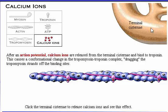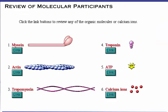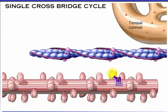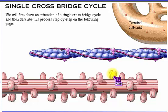Before seeing how all these components work together in a complete crossbridge cycle, click the link buttons to review any of the organic molecules or calcium ions. The five organic molecules and the calcium ions function together in a coordinated manner to cause the thin filament to slide past the thick filament. We will first show an animation of a single crossbridge cycle and then describe this process step by step on the following pages.